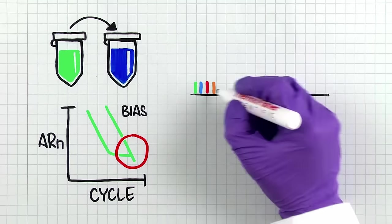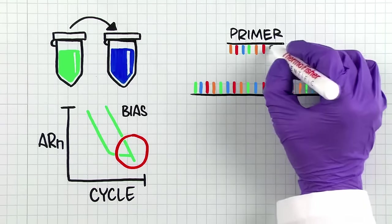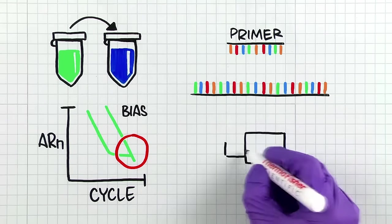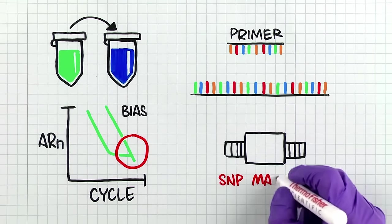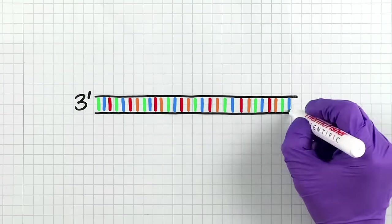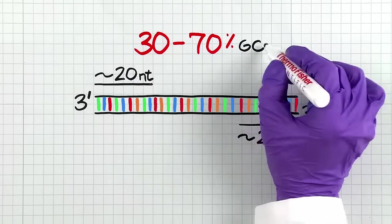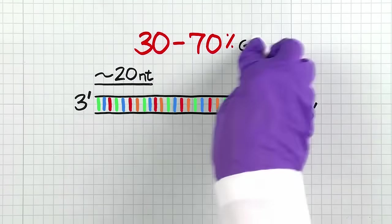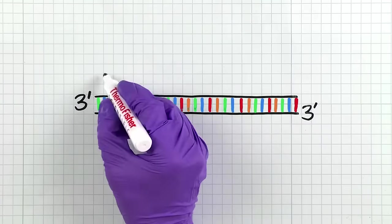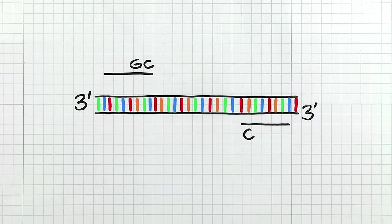Once the cDNA is generated, make sure to use the right primers for the qPCR. You will need to use some bioinformatics to design your primers, such as a tool like SNP Masker. In general, primers should be 20 nucleotides in length with a GC content in the 30 to 70% range. The last five nucleotides at the 3' end should include no more than two G or C bases to avoid specificity issues.